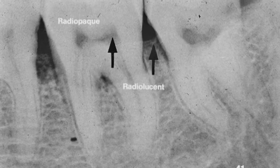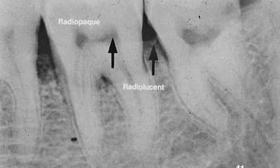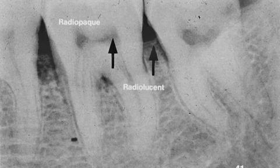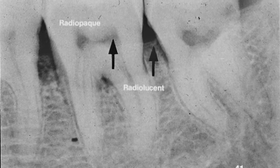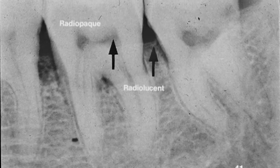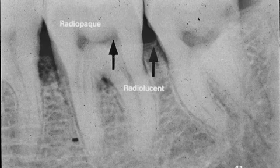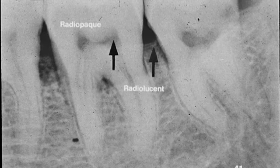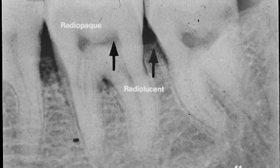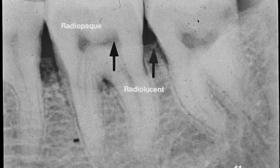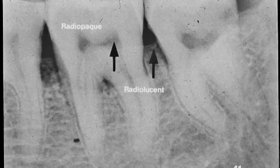Radiolucent structures are gray or dark. Radiopaque structures are light gray to white.